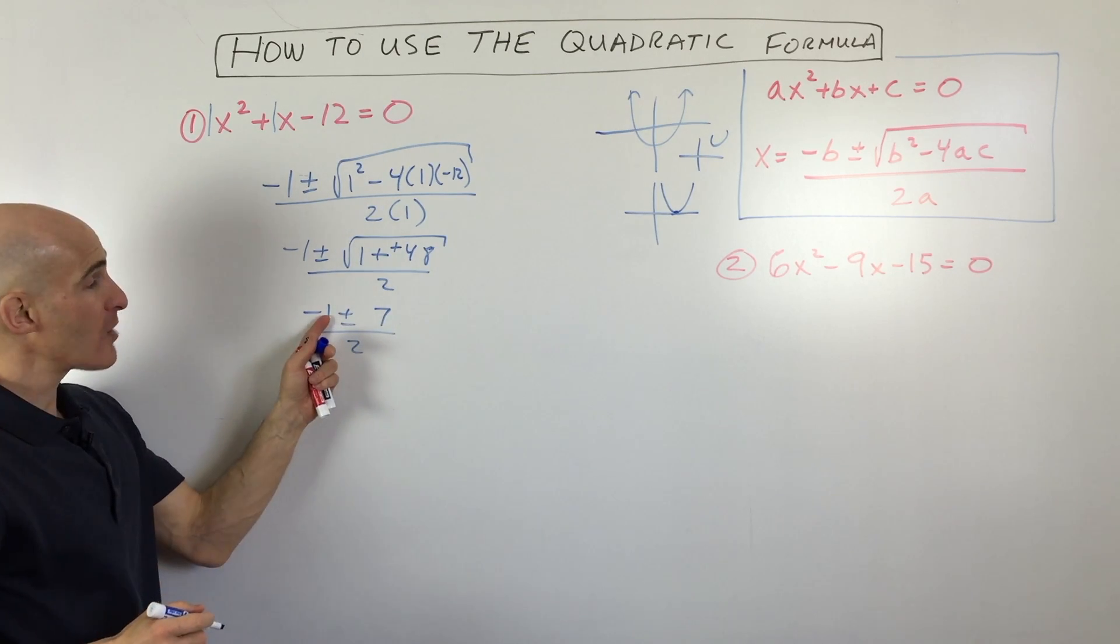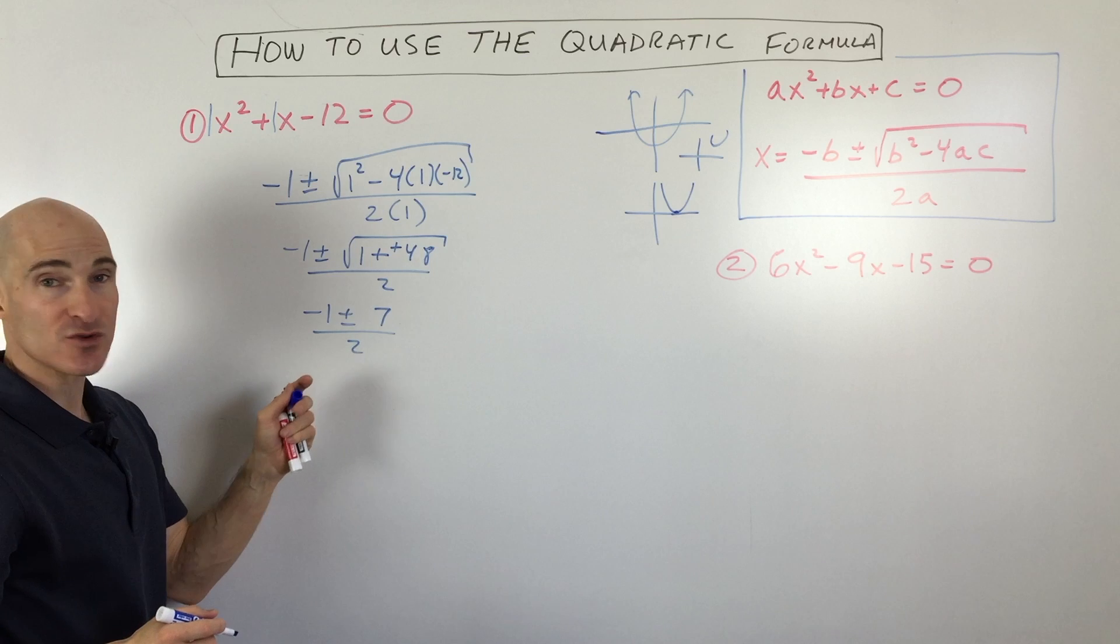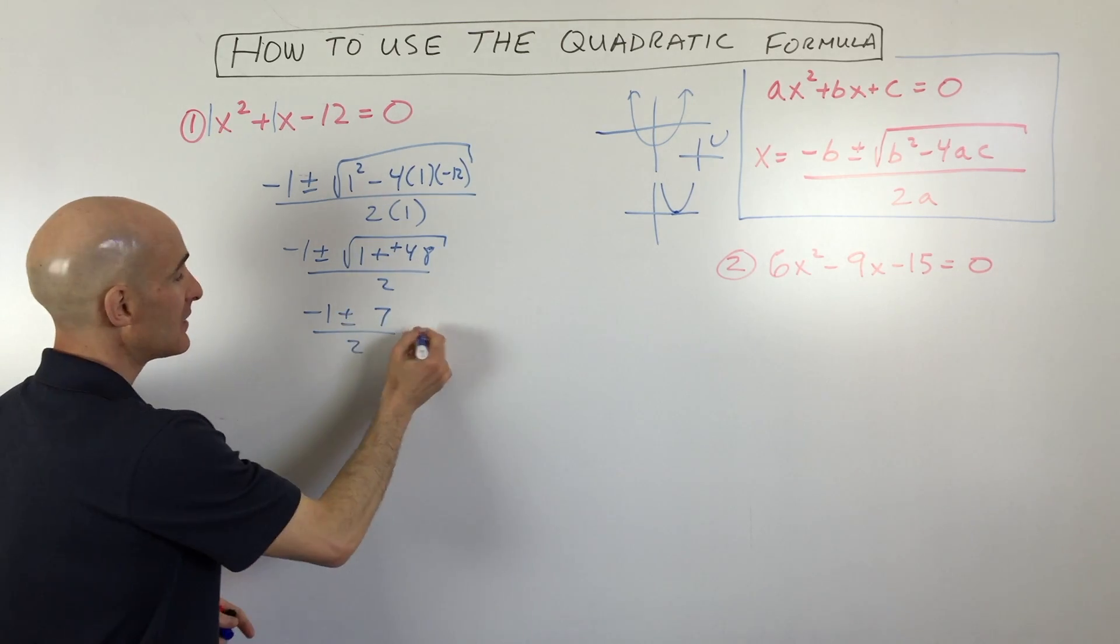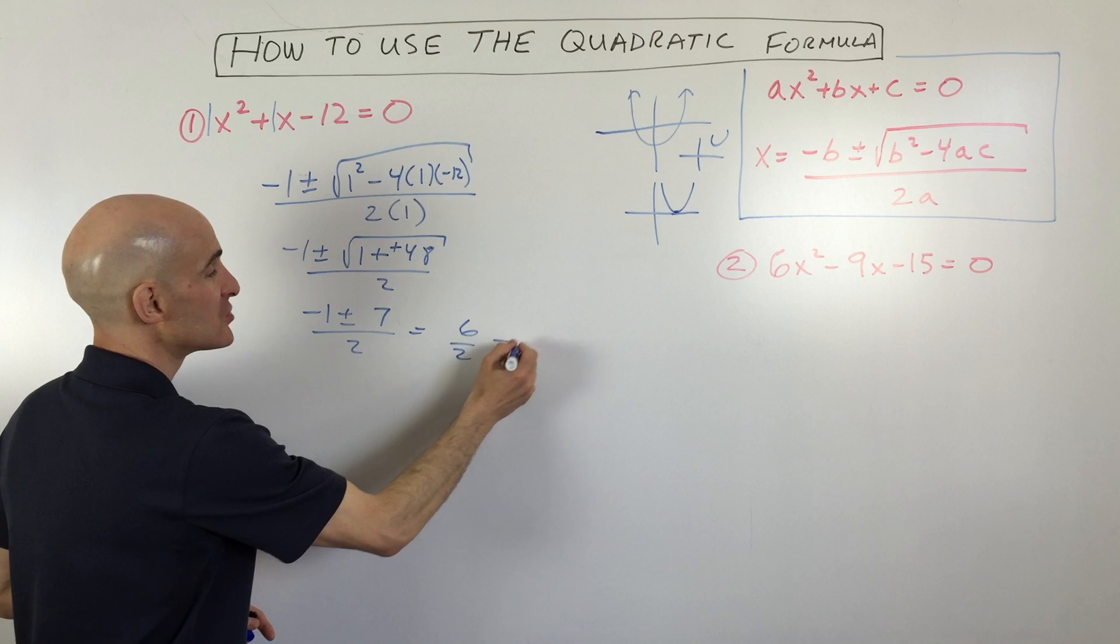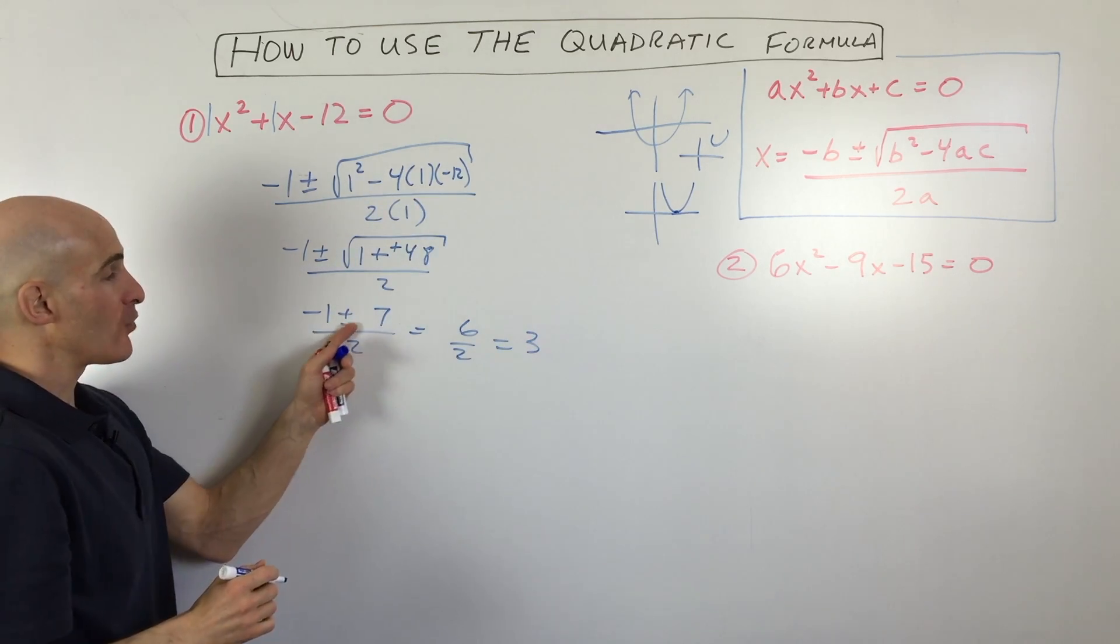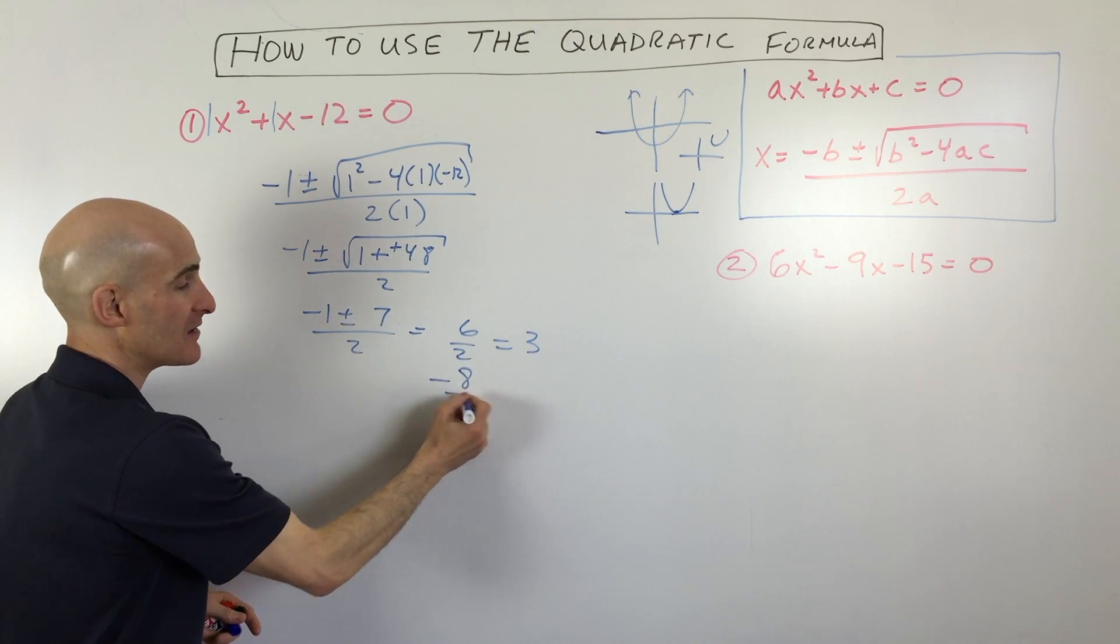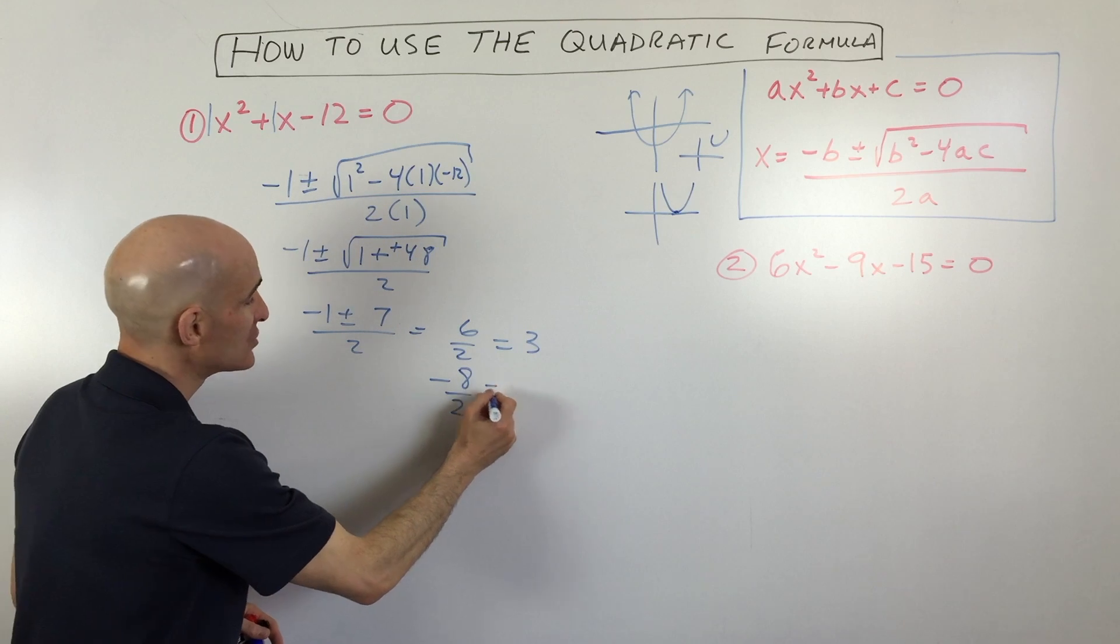So there you go. Now we have two problems. We have one where you're adding and one where you're subtracting. So negative 1 plus 7 equals 6 divided by 2, which is 3. And negative 1 minus 7 is negative 8 divided by 2, which equals negative 4.